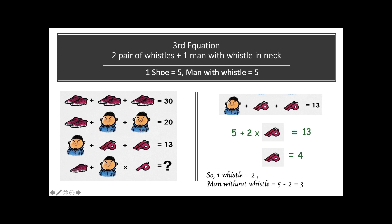This is the end of the third equation. At the end of the third equation we have got three values: one shoe is equal to 5, man without whistle is equal to 3, and one whistle is equal to 2.